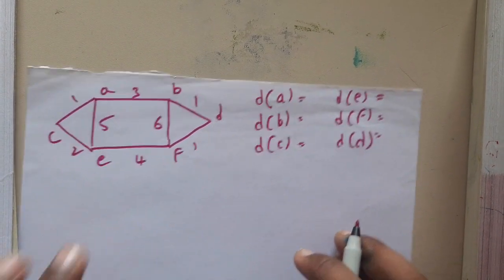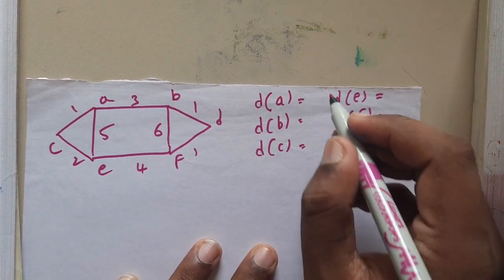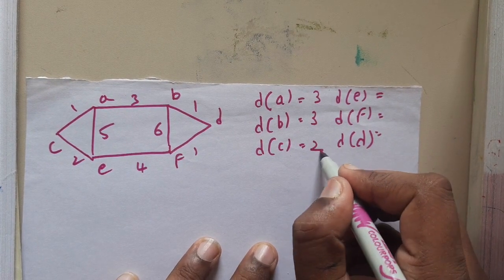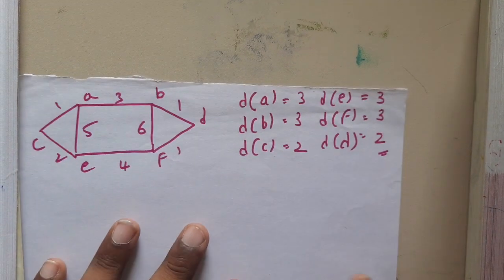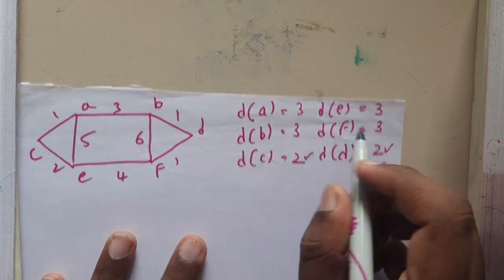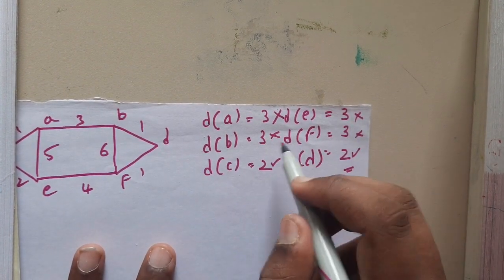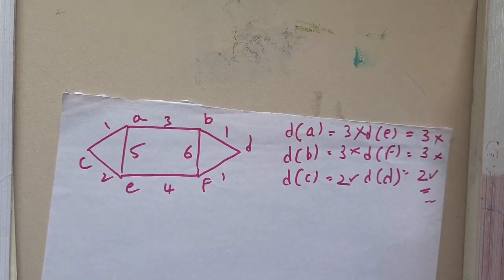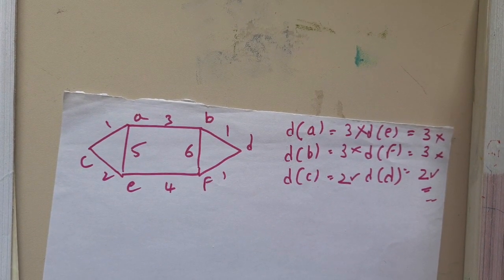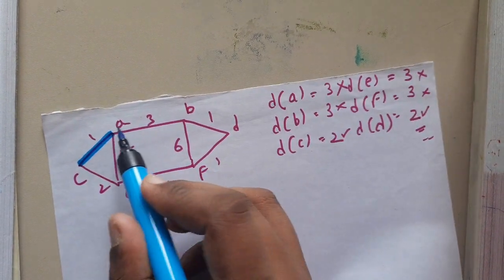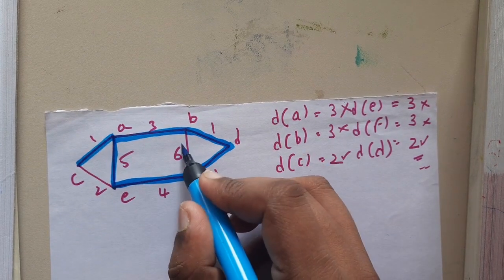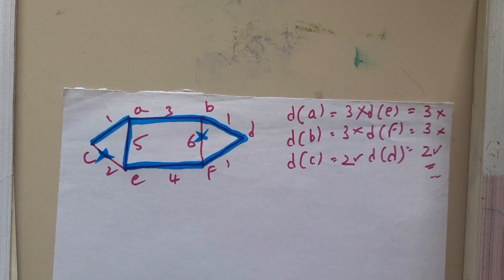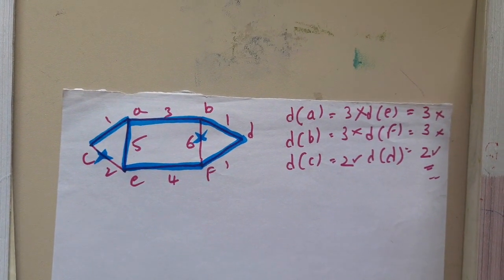Checking the degrees: degree of A is 3, degree of B is 3, degree of C is 2, degree of E is 3, degree of F is 3, and degree of D is 2. Vertices C and D have no issue since they have even degree. The issue is with A, B, E, and F which do not have even degree. Hence this graph is currently not a Eulerian graph.